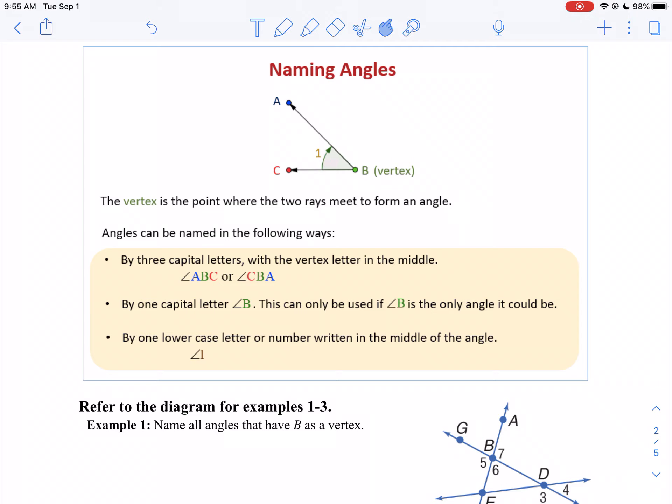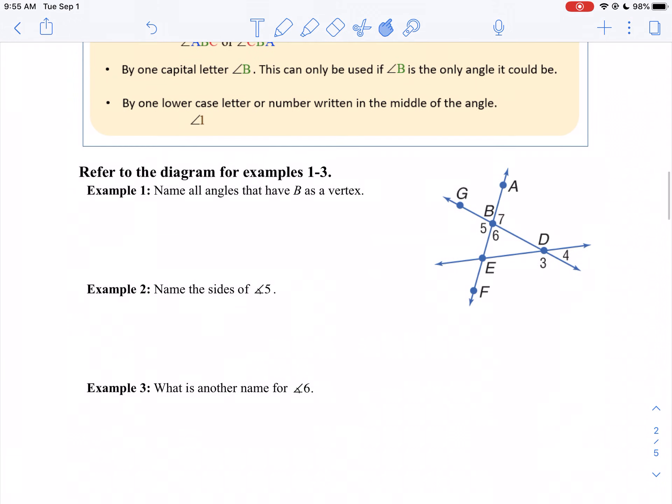Now let's apply that to a problem here. On example 1, I want to name all the angles that have B as a vertex. So I'm going to start here with this first angle. I'm going to say angle ABG. You could say angle GAB also, but I'm going to go ABG.